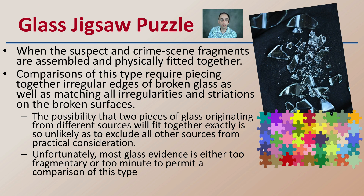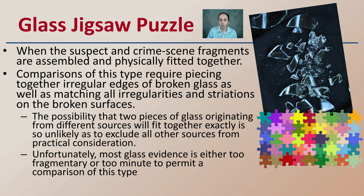When we get these pieces of glass evidence, when the suspect and crime scene fragments are assembled and physically fit together — which can be a very time-consuming process — comparisons require the piecing together of irregularities in the broken glass as well as matching striations on the broken surfaces. The possibility that two pieces of glass originating from different sources will fit together exactly is unlikely, and this is a way to exclude other sources. Unfortunately, most glass evidence is either too fragmented or too minute to permit a comparison of this type, which is part of the reason why it's so important to collect as many pieces as possible.